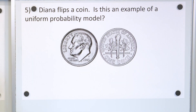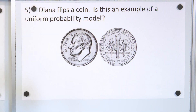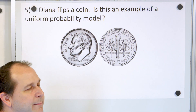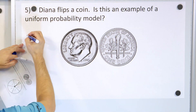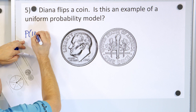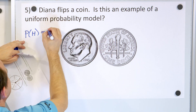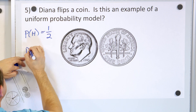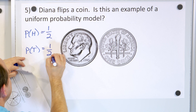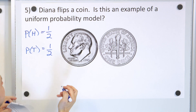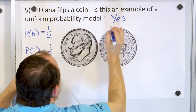Let's take a look at problem number five. Diana flips a coin. Is this an example of a uniform probability model? We kind of already gave it away — the probability of landing on heads is one outcome out of a possible two, so it's one-half. The probability of landing on tails is also one outcome out of two. So the probability of heads and tails is the same, and yes, this is an example of a uniform probability model.